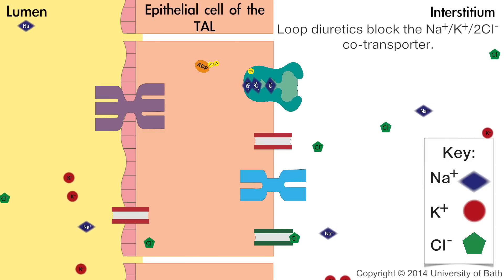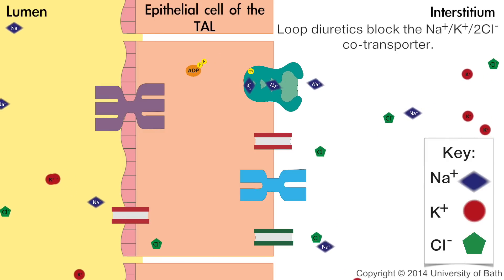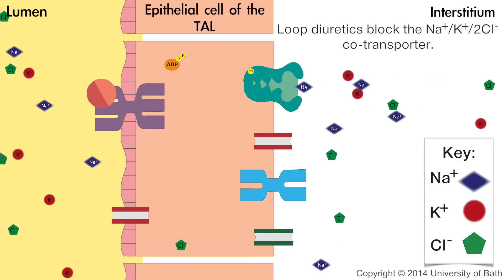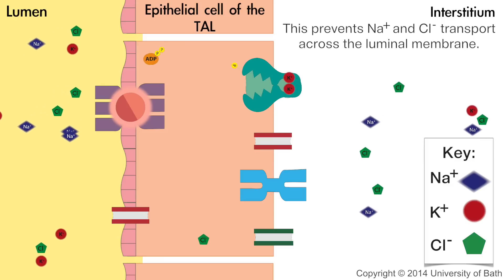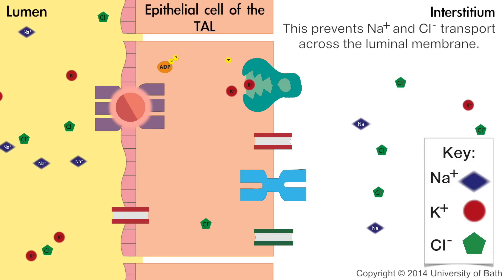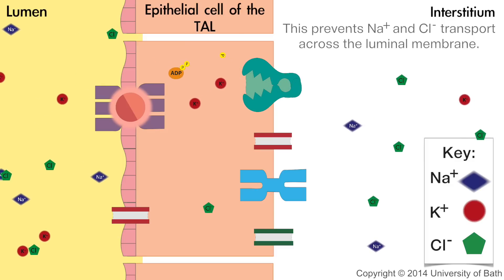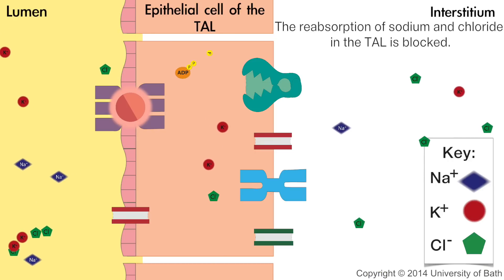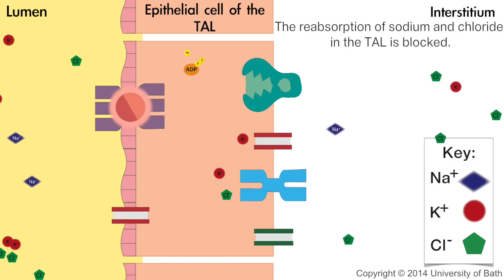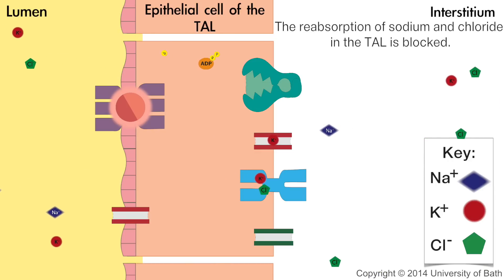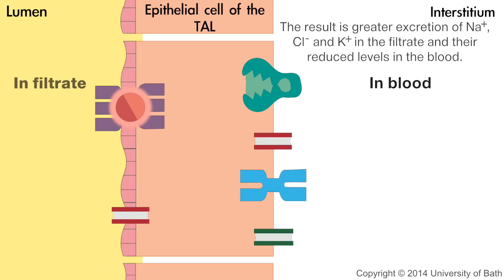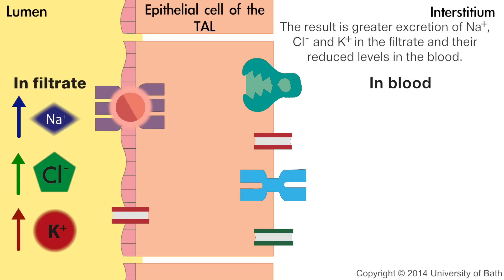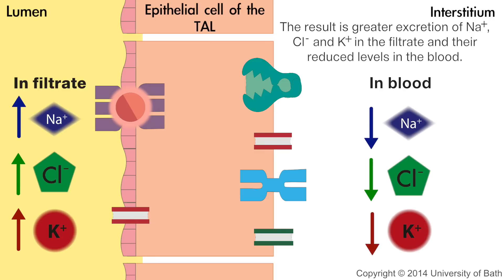Loop diuretics block the sodium-potassium chloride cotransporter. This prevents sodium and chloride transport across the luminal membrane. The reabsorption of sodium and chloride in the thick ascending limb is blocked. The result is greater excretion of sodium, chloride, and potassium in the filtrate and their reduced levels in the blood.